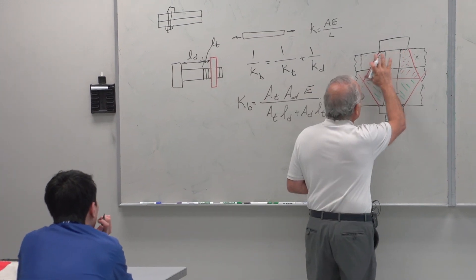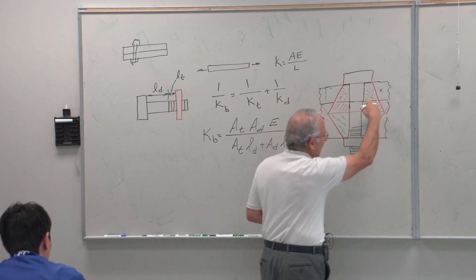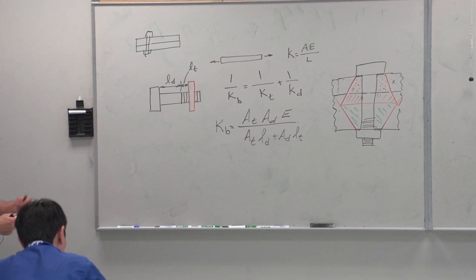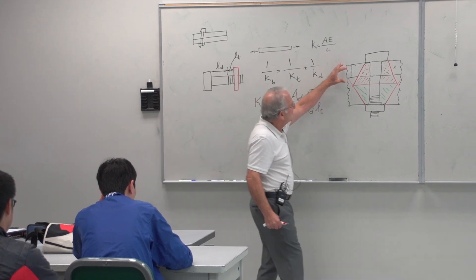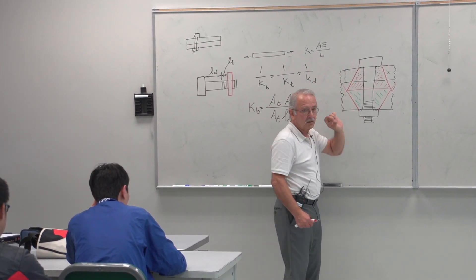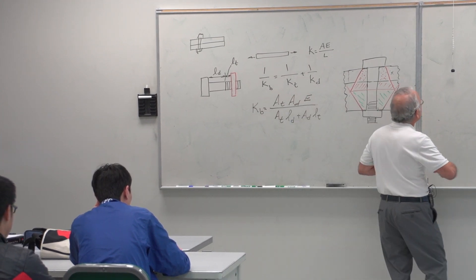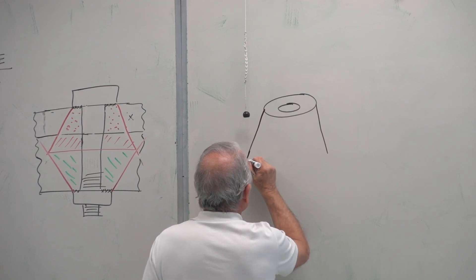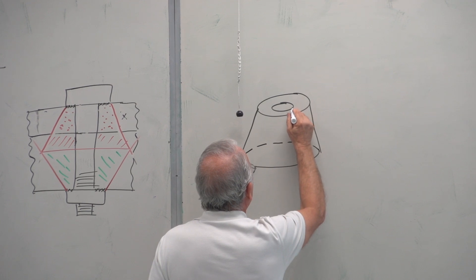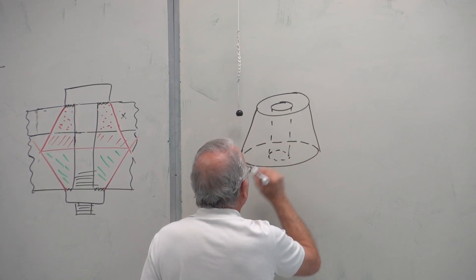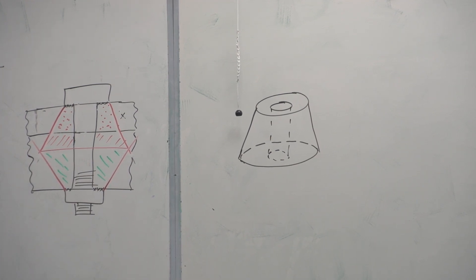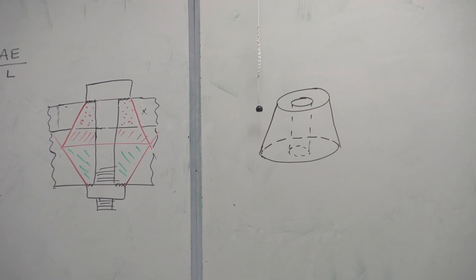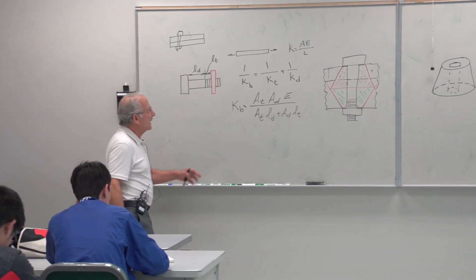As we look at this, we see three regions. Each of which, three-dimensionally, is called a frustum of a cone, or a truncated cone. So we have three different frusta here.